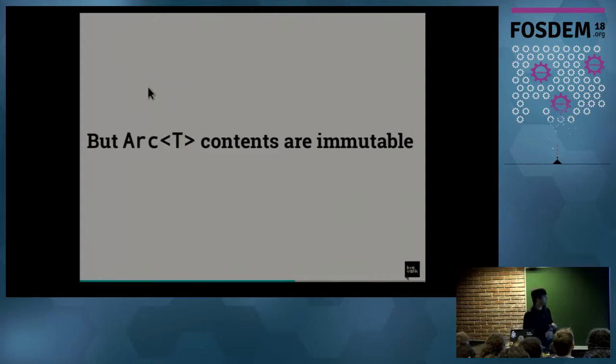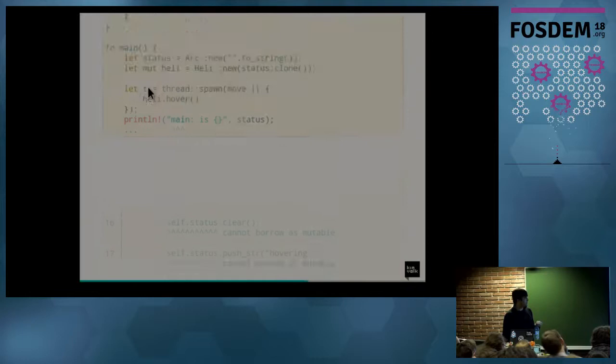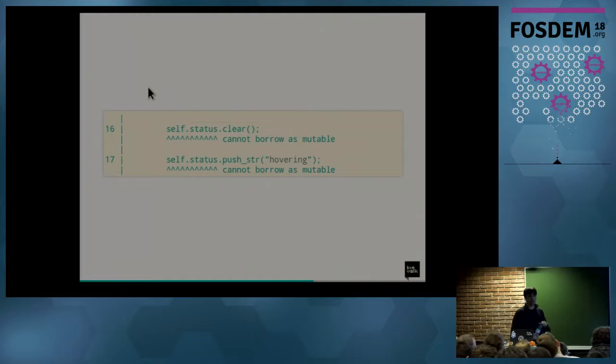But the problem with arc is that it's not mutable. So you can't like get a resource out of it and then modify it. That's not possible. So let's look at example. So this time it's the same exact code again, except that in the hover method now we are modifying the resource. And the methods I'm calling is just the normal methods of the string type. Clearing the string and then pushing another string on the existing string. But this won't work because I'm modifying it. And the main thing is I can't borrow it as mutable because it's not a mutable resource. I didn't mark it as one either.